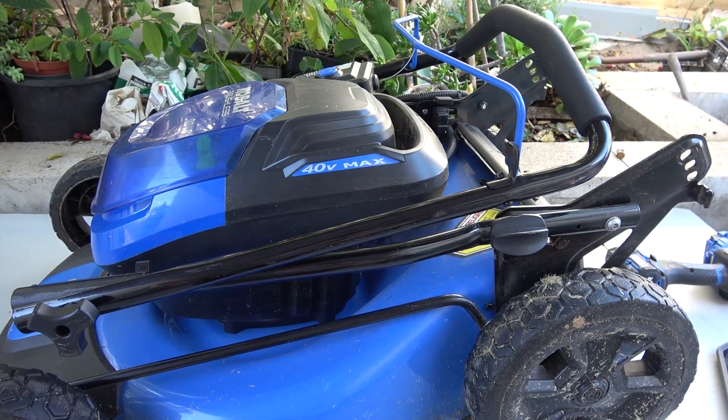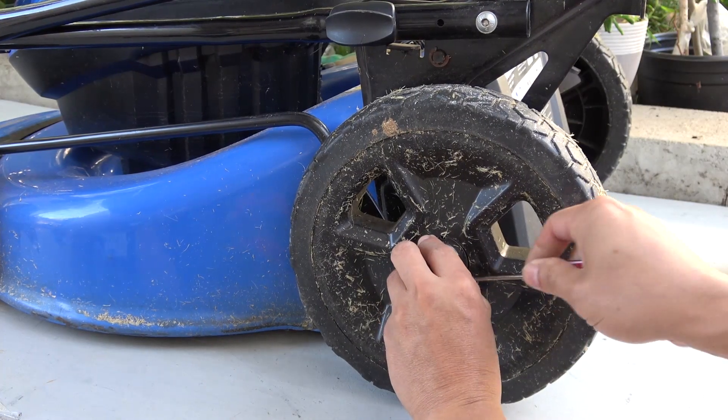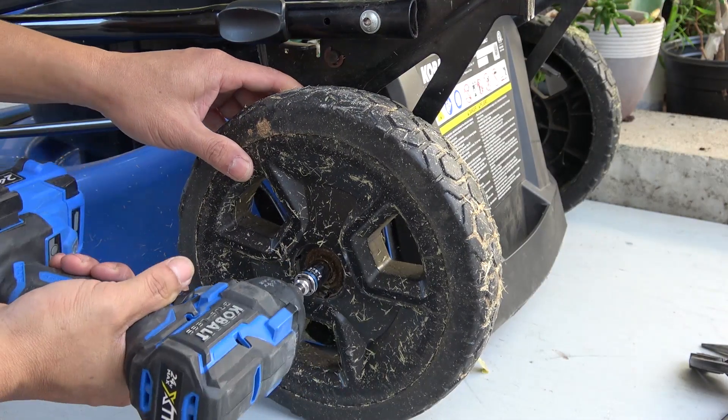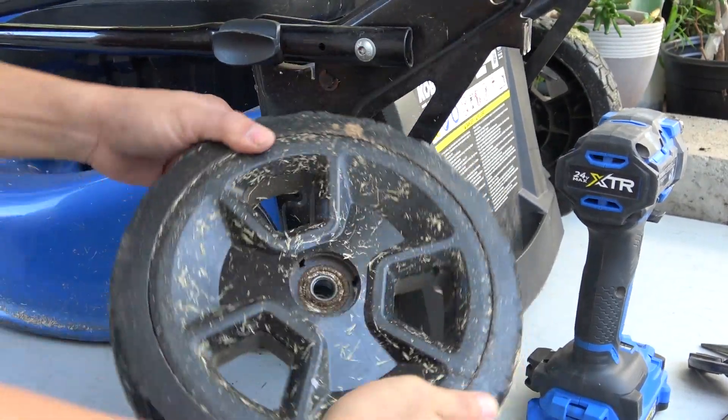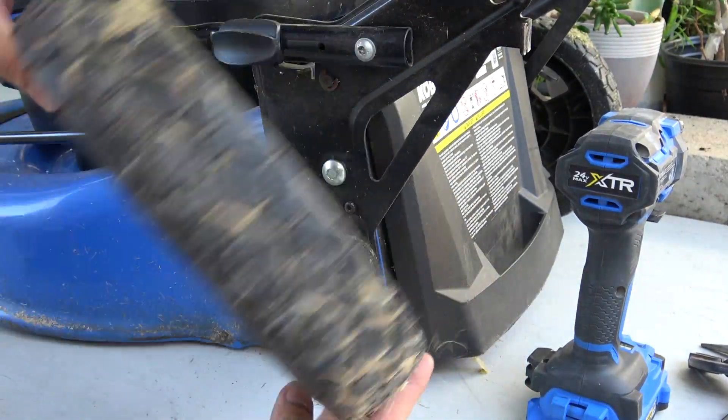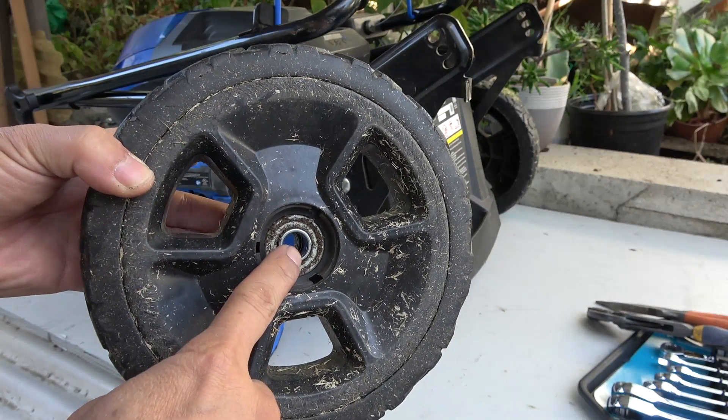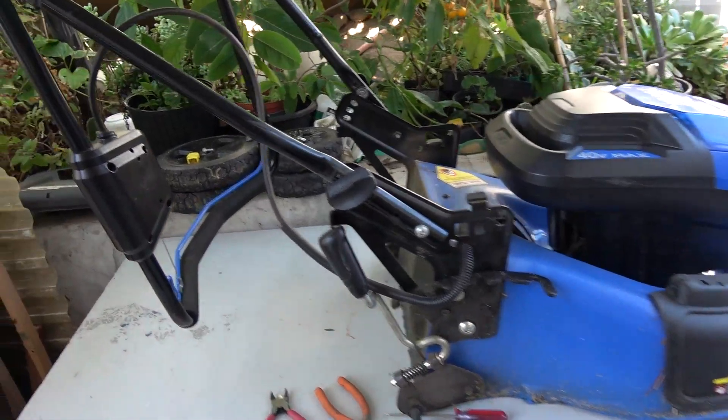So let's get started. Pop the wheels out first, there are 12 millimeter bolts, pretty easy. These are good wheels, it's got real bearings on both sides. All right I got the wheels out.